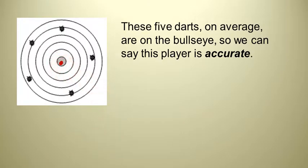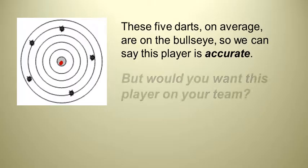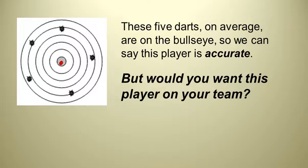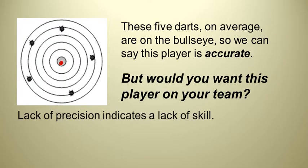Technically, we can say that this dart player is accurate for this particular game of darts. But, in all honesty, even though this person is accurate, would you really want this player on your team? Because they're just all over the place. They never got on the bullseye. They were all around it. This is a case where the person is not precise, but technically they are accurate. And lack of precision indicates a lack of skill.